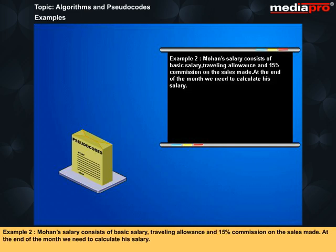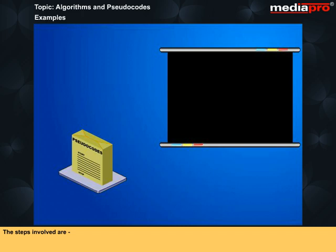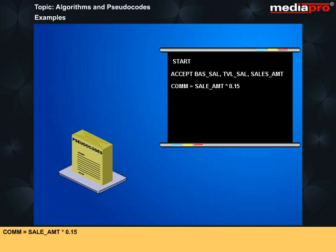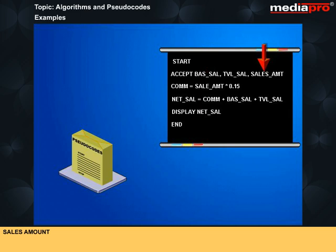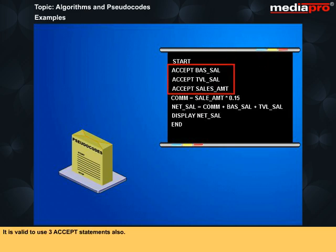Example 2: Mohan's salary consists of basic salary, traveling allowance and 15% commission on the sales made. At the end of the month, we need to calculate his salary. The steps involved are: Start, Accept BAS_SAL. It may be noted that here we are accepting three values: basic salary, sales amount, and travel allowance. It is valid to use three accept statements also.